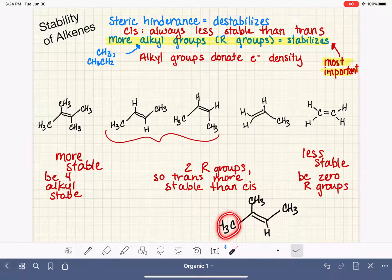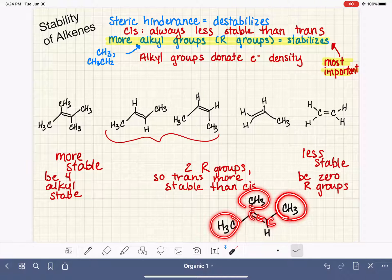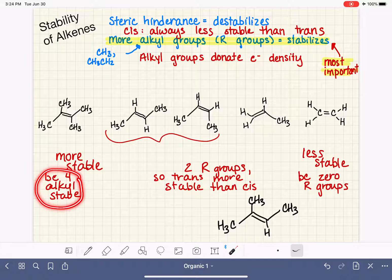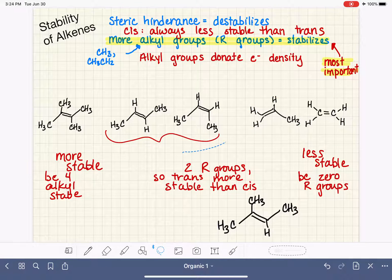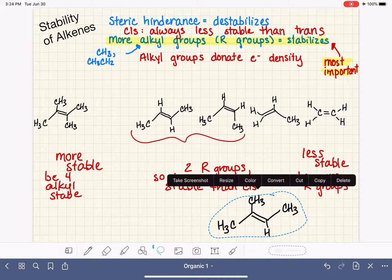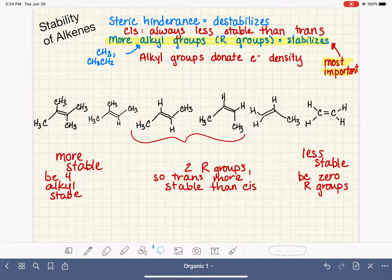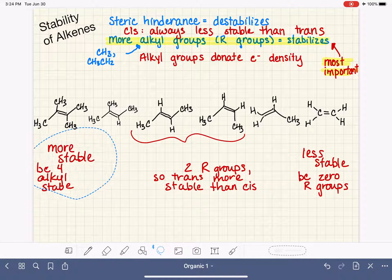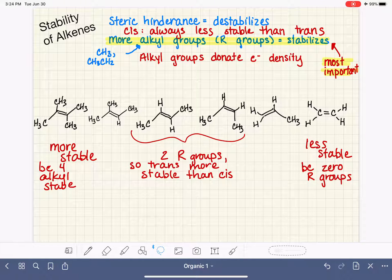Now let's look at this example. Where does this guy belong? This carbon-carbon double bond has three alkyl groups. So it belongs right here, less stable than four, but more stable than two alkyl groups. And there is our relative ranking of six different types of alkenes.